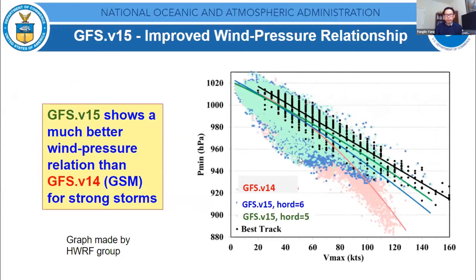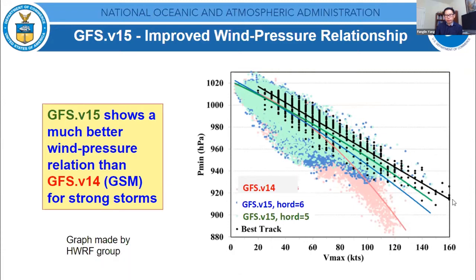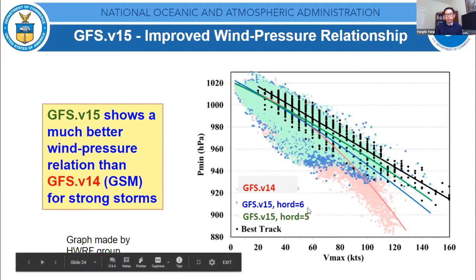Another major improvement for version 15 was the wind-pressure relationship. For the old spectral model, even when storm center pressure is very low, the wind speed is limited — it doesn't match the observed relationship shown by the black line. The FV3 versions we tested both improved the wind-pressure relation. Our final configuration used a specific convection scheme option with HCLOSE equal to 6. So even though we made major achievements with version 15, there were still some concerns. The model showed excessive cold bias in winter, synoptic systems moved too fast to the east — the so-called progressive bias — and hurricane track forecast errors, especially for strong storms, were larger than with the old spectral model. There were also temperature cold biases in the stratosphere, and boundary layer inversion was not improved.